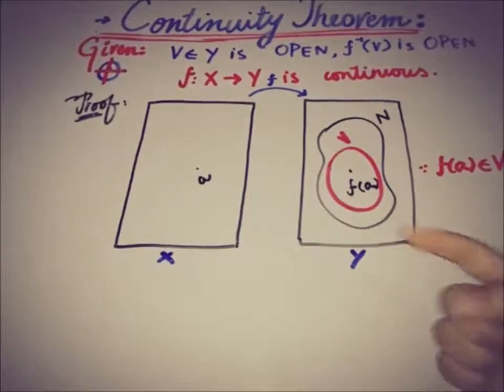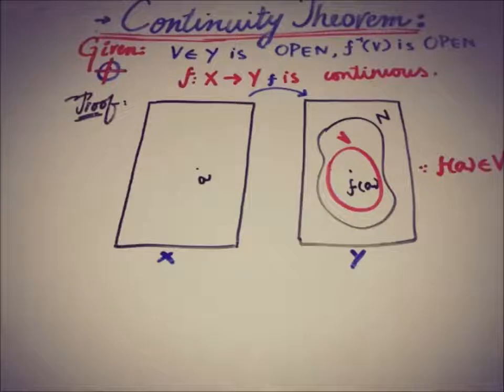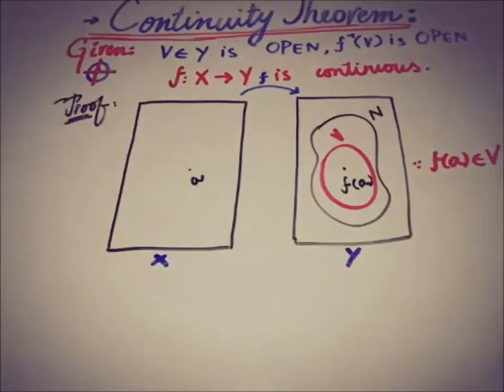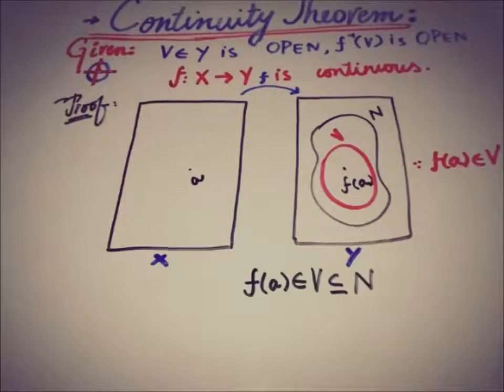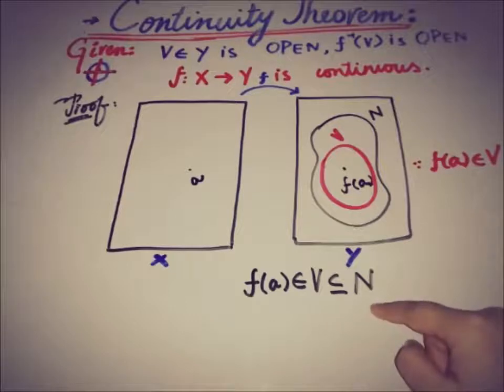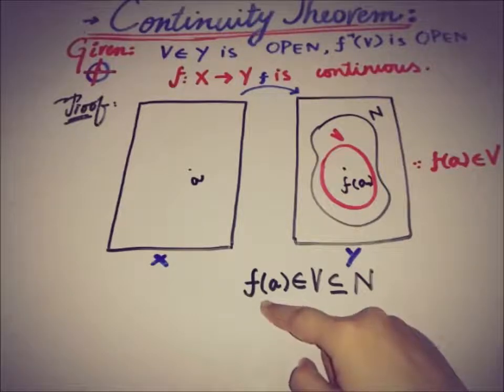We know that f(a), the image of a, is a part of open set V that is in Y. Now the relation of V, that is the open set, and the neighborhood of the image of a can be written as: the image of a belongs to open set V and V is a subset of the neighborhood of that image of a, that is N.